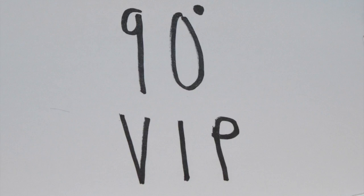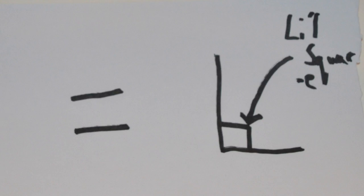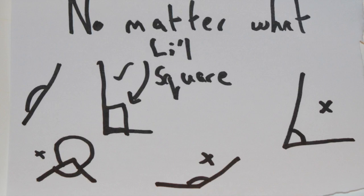Then carrying on from that, so you might be wondering why does 90 degrees get the VIP treatment? Well, just so you know, 90 degrees looks like this and can be identified with this little square in the corner.